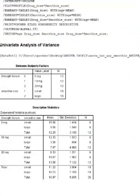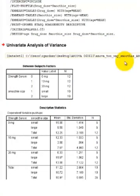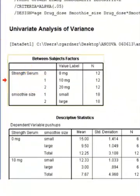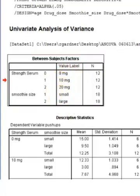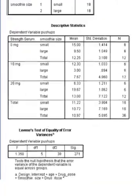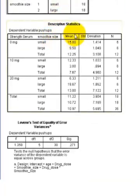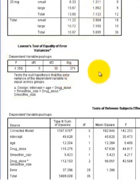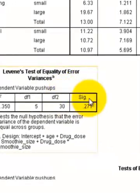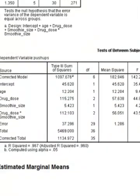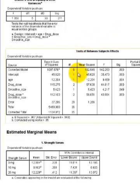Now comes the fun part — we have to interpret this. Up first, it tells you the different groups for each IV: how much drug they got, or whether they got a small or large smoothie, and how many are in each group. There are your means and standard deviation of each group and subgroup. Here's our Levene's test — we did not violate the homogeneity of variance assumption because the significance is greater than 0.05. And here's your money right here: the test of between-subjects effects box. Let's go ahead and interpret this.